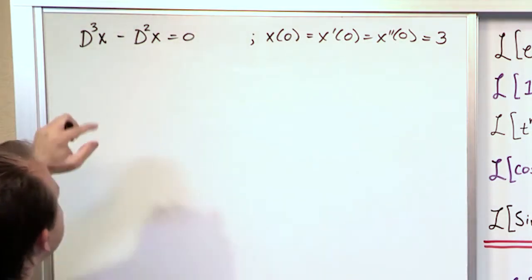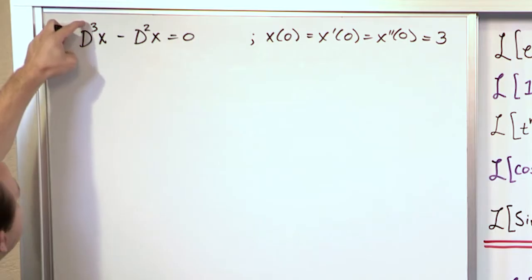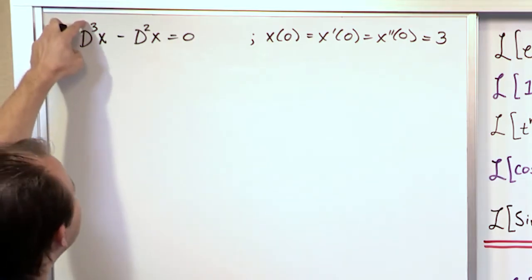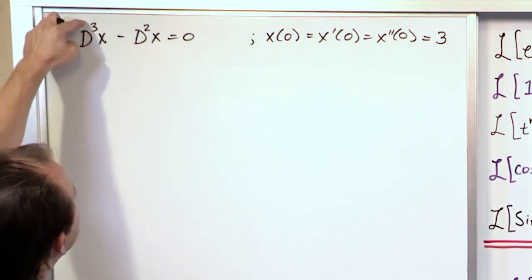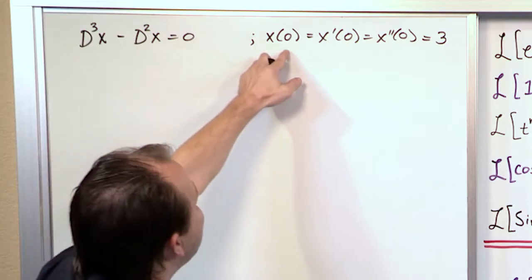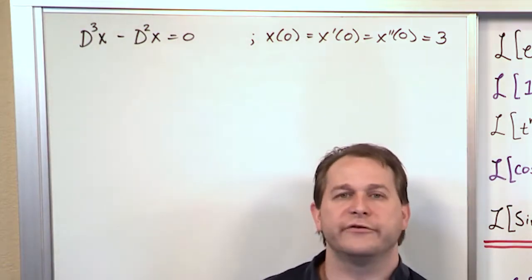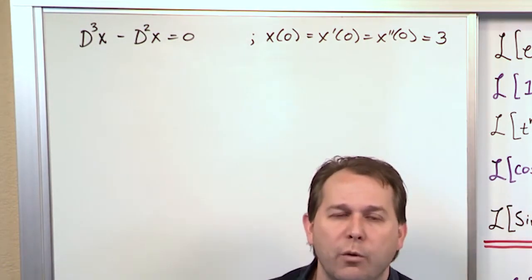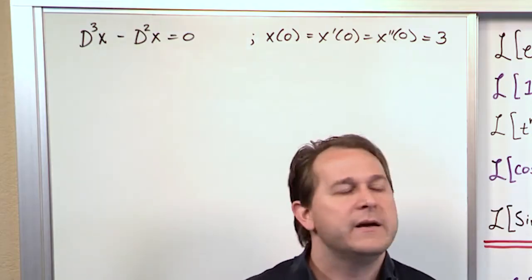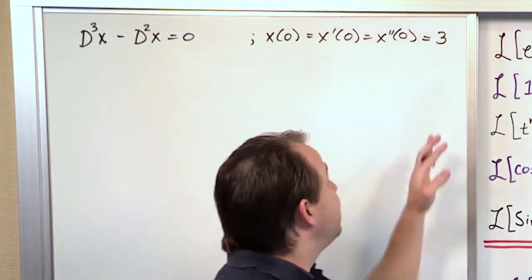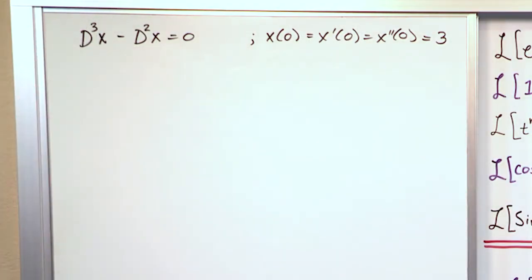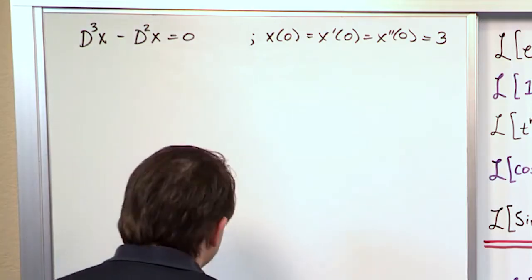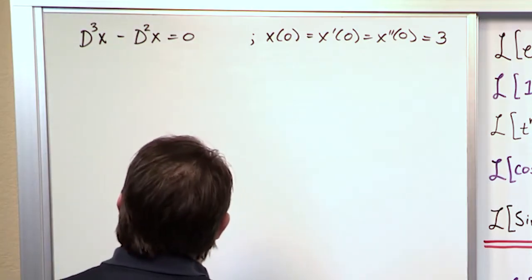Notice also this is a third order differential equation, because the highest derivative in the whole thing is 3. There have to be three initial conditions in order to solve it — that's a property of differential equations. You always have to have the same number of initial conditions as the highest derivative in order to lock down the solution.